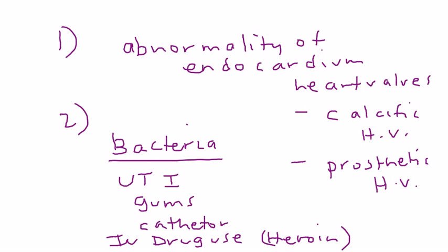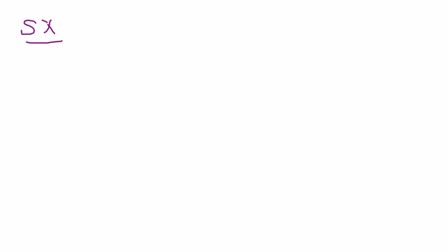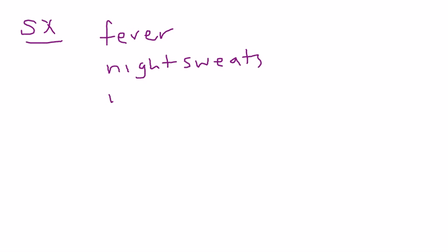Heroin addicts, for example, that inject heroin into their blood vessels with a needle. So those are the two things you need — some sort of abnormality of the heart valve and some bacteria. Together the bacteria goes and sits on the heart valve and causes endocarditis. The symptoms include common nonspecific ones like fever, night sweats, and just being very tired, feeling a malaise, chills.